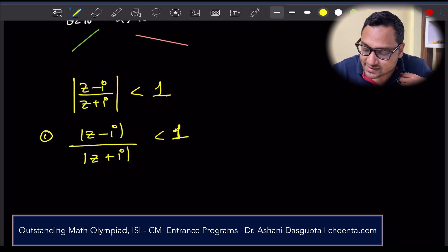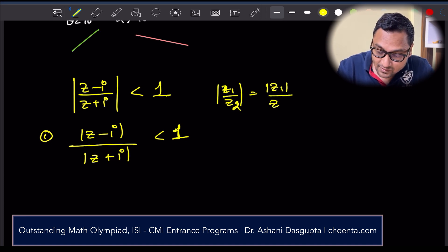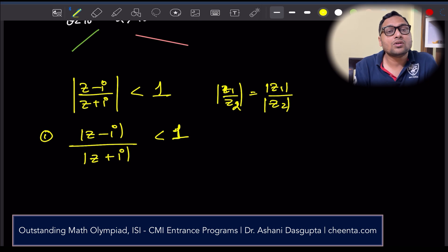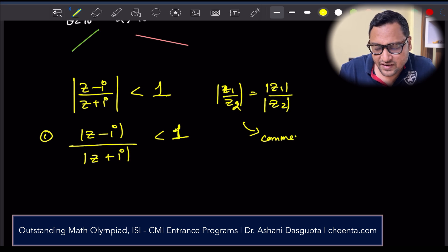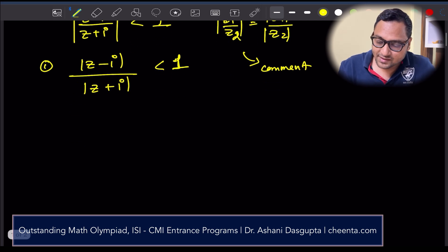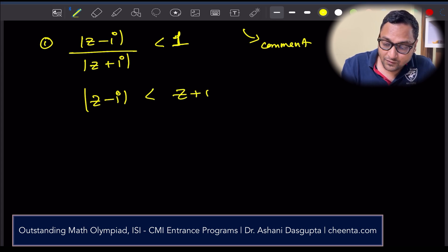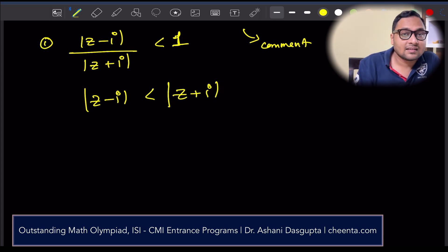Why can we do this? If I have two complex numbers, z1 and z2, the absolute value of the ratio is equal to the ratio of the absolute values. This is a very well-known result in complex numbers. But again, can you prove it in the comment section? It's a very simple proof. You can do it algebraically as well. Now that we have this, we can just cross multiply. So, absolute value of z minus i is less than absolute value of z plus i. This is the situation.